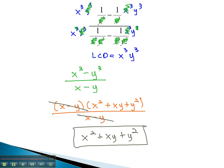When dealing with monomials, to find the least common denominator, we use the highest exponent on each factor.